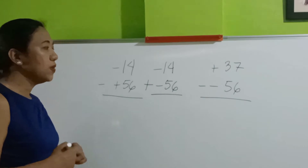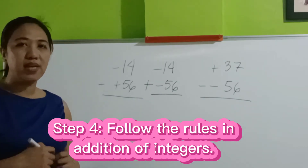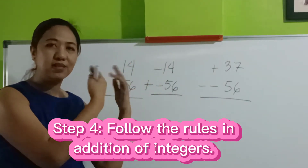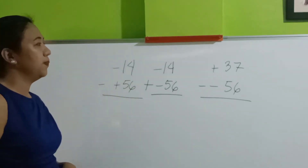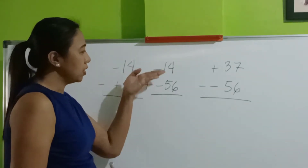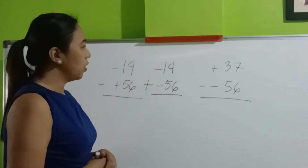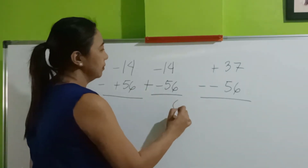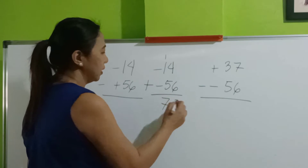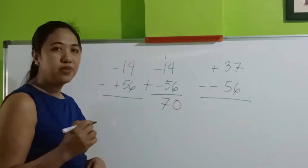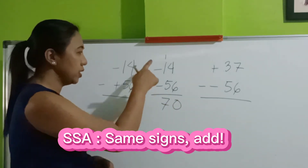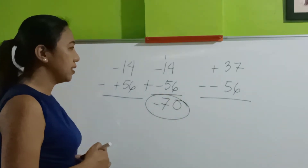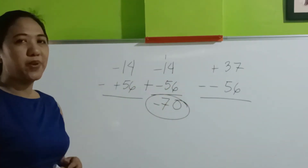And then, follow the rule in addition of integers. If you want to go back to that topic, just visit the link above. Because they are both negative numbers, let's add. Then follow the common sign, which is negative. So this is now negative 70.